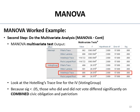Because our significance is less than .05, we know that those who did and did not vote differ significantly on combined sense of civic obligation and patriotism. For APA format: Hotelling's Trace = .995, which rounds to 1, equivalent to F(2, 57) = 28.37. Because the MANOVA is significant, we're going to do step-down analysis to figure out how they differ on these DVs.